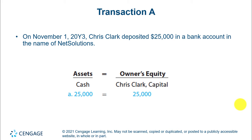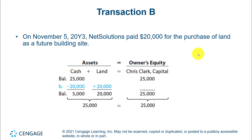What he's going to do initially is put $25,000 of his own money into the company. Assets of the company go up $25,000 — specifically cash — and equity goes up $25,000. The next thing he does is buy a piece of land. Nothing really happens to equity here; you're essentially taking one asset, cash, and trading it for another asset, land.